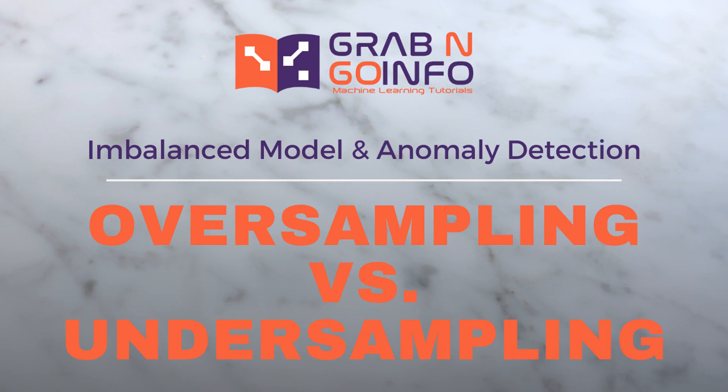Oversampling and undersampling are the techniques to change the ratio of the classes in an imbalanced modeling dataset. This step-by-step tutorial explains how to use oversampling and undersampling in Python to adjust the imbalanced classes for machine learning models.